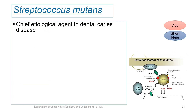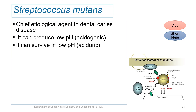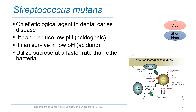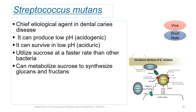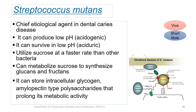Streptococcus mutans is considered the chief etiological agent in dental caries by virtue of two properties. One is acidogenicity — it can produce a low pH by utilizing sucrose — and it is also aciduric, meaning it can survive in low pH. It utilizes sucrose at a faster rate than other bacteria and can metabolize sucrose to synthesize glucans and fructans, as well as sticky polysaccharides which help in attachment to tooth structure. It can also store intracellular glycogen, which prolongs its metabolic activity.